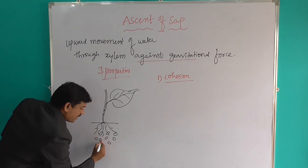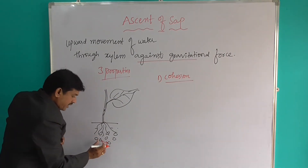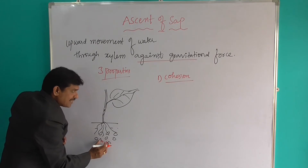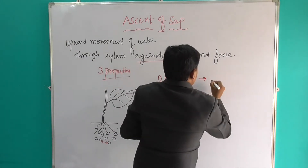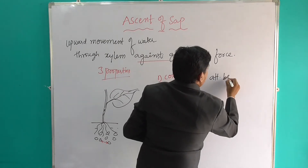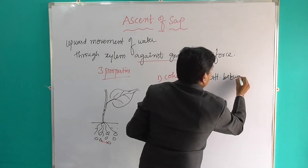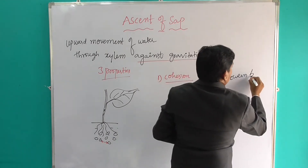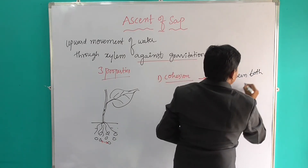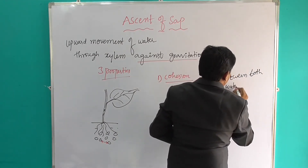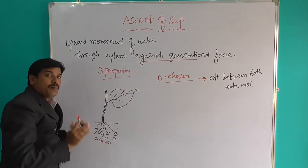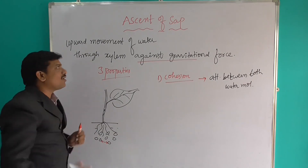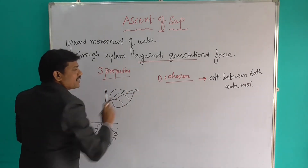So what happens here? The attraction between water molecules is called cohesion. The attraction between both water molecules is called cohesion.